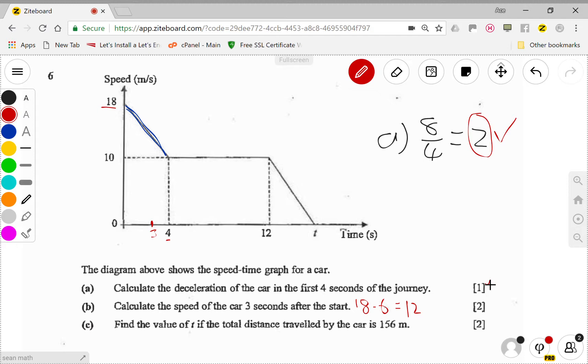But you can do it like by 8 over 4 times 3 first then take the 18 minus 6. The area.